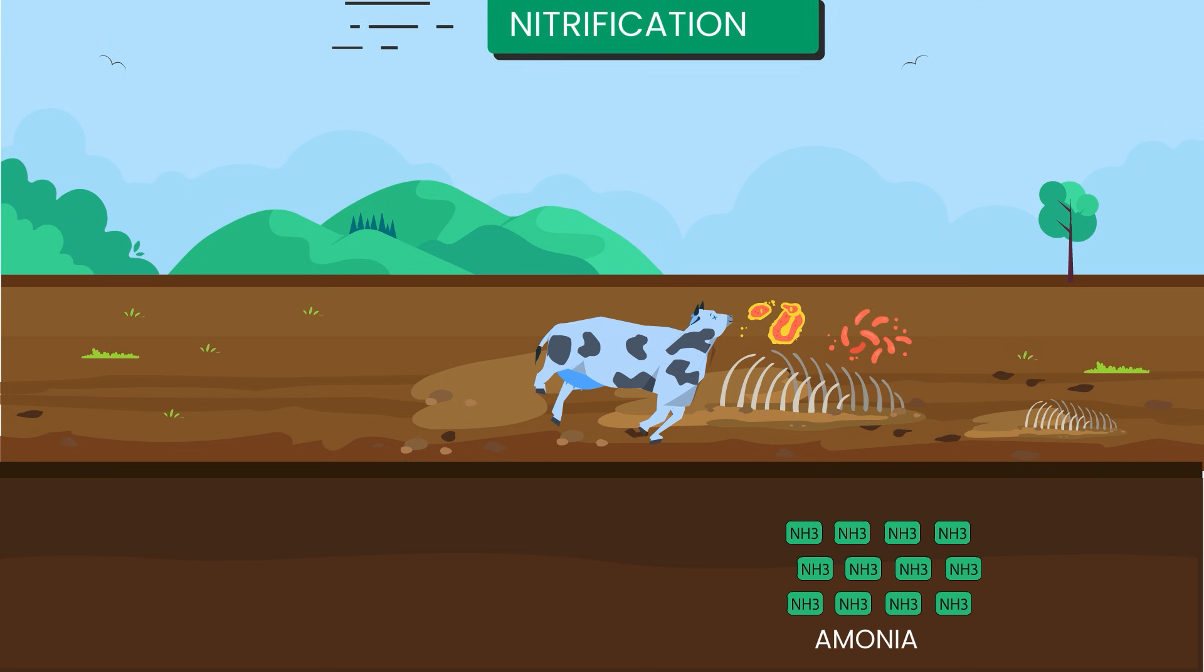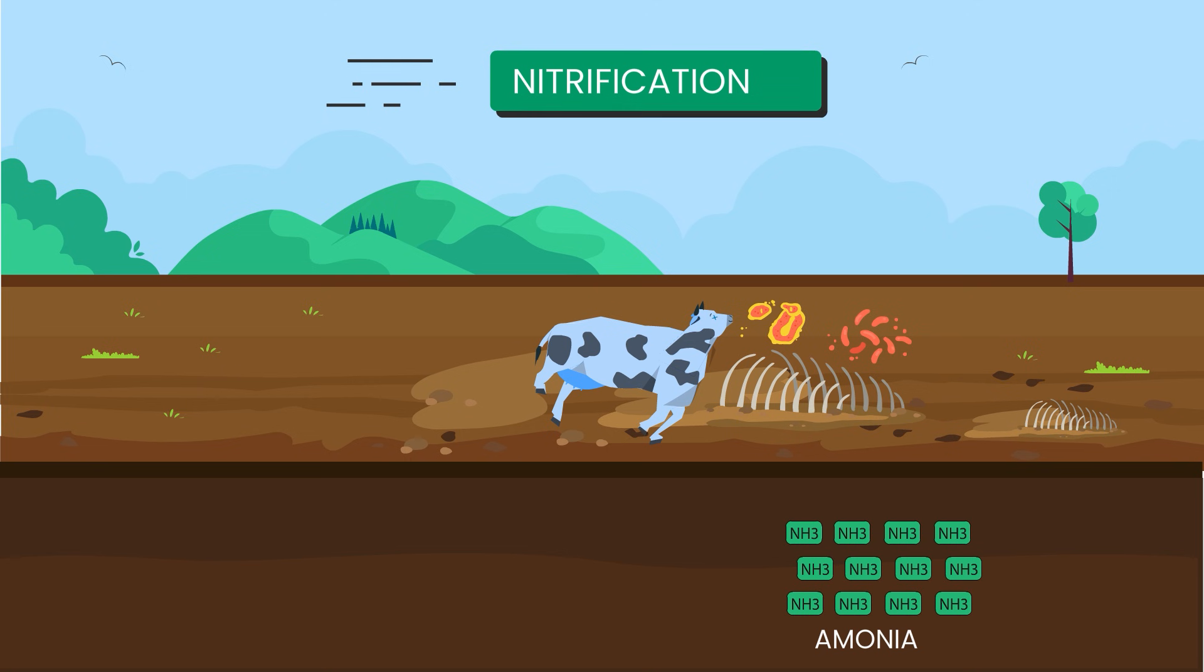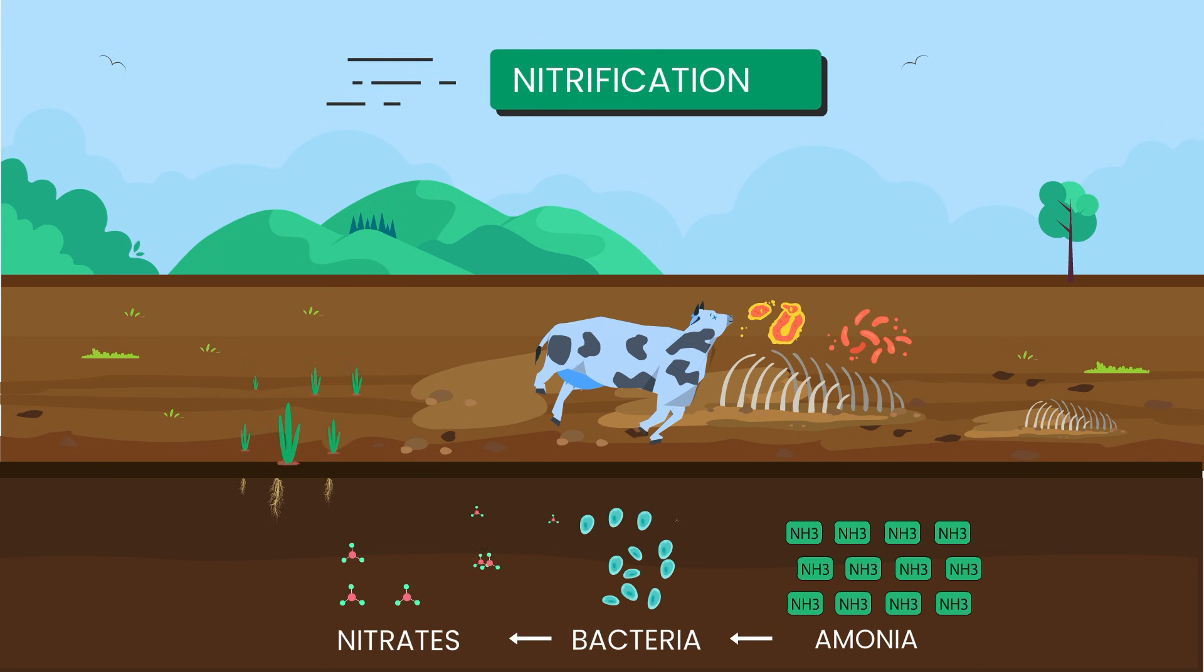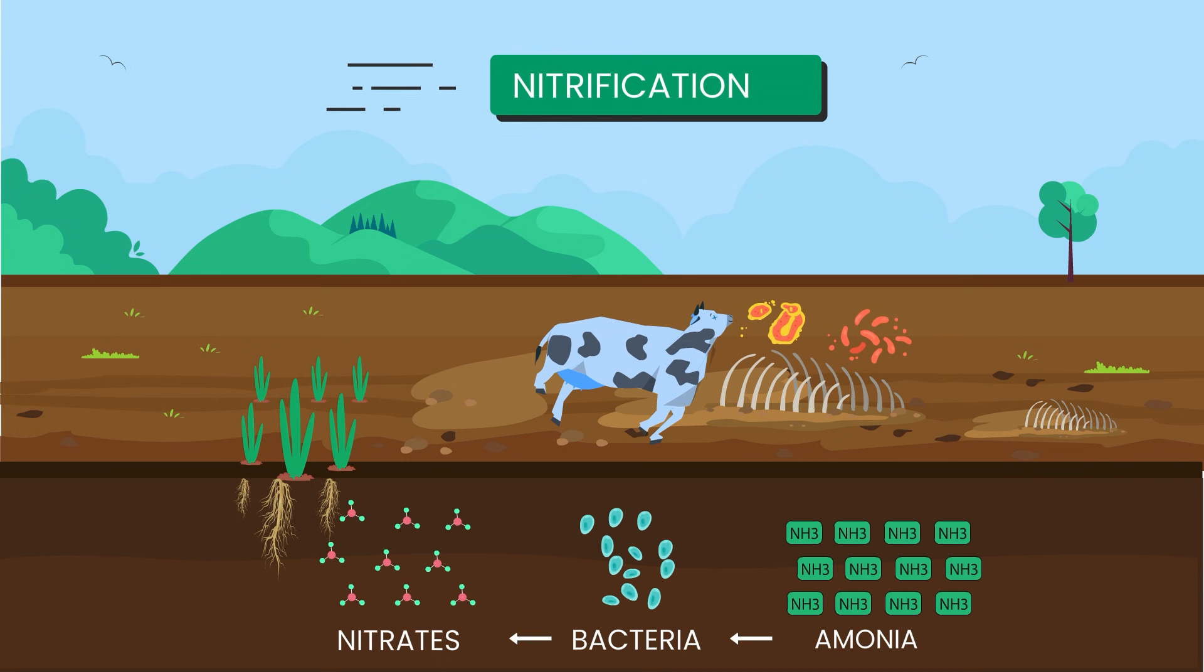Fourth stage, nitrification. Next, other bacteria in the soil convert the ammonia into nitrates, which plants can use again. This keeps the cycle going.